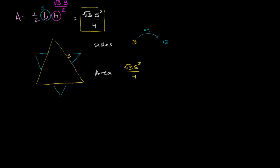Now what is the area? It's going to be the area of our original equilateral triangle plus the area of each of the smaller ones. We have three of those smaller triangles, and we use the equilateral triangle area formula again. But the sides of these smaller triangles aren't s anymore — they are s/3. So the area added is 3 times √3·(s/3)²/4.